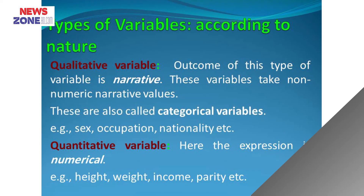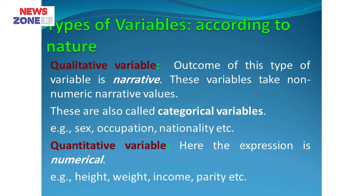According to nature, we can classify variables into two groups: qualitative and quantitative. Qualitative variables take non-numeric, narrative values — examples are occupation, nationality, and sex. Quantitative variables are numerical, like height, weight, income, and parity.